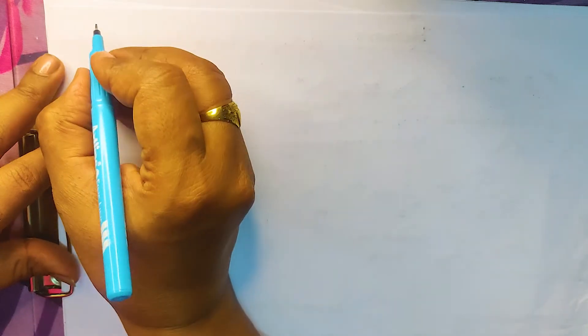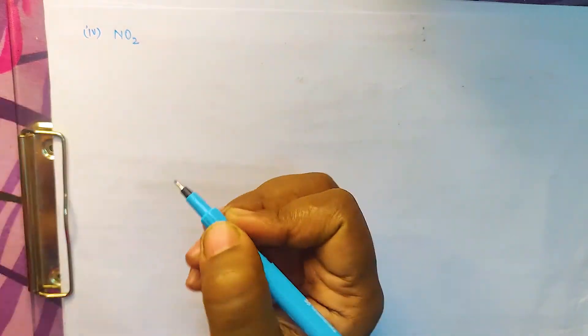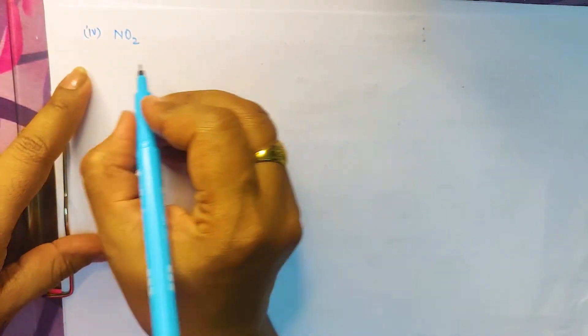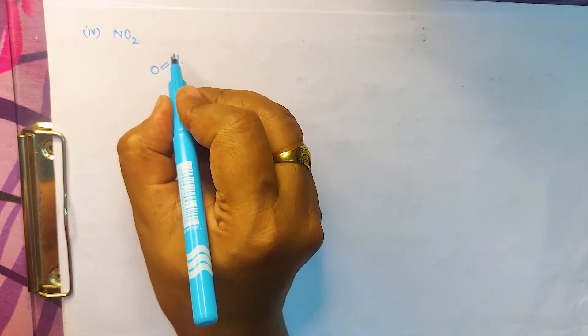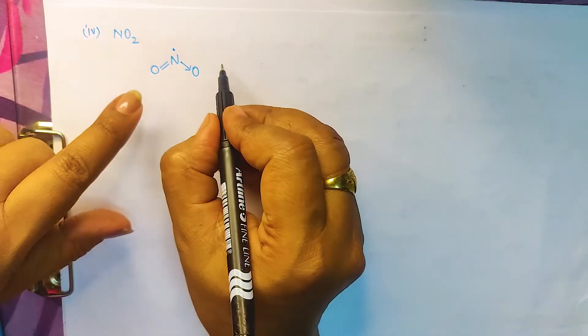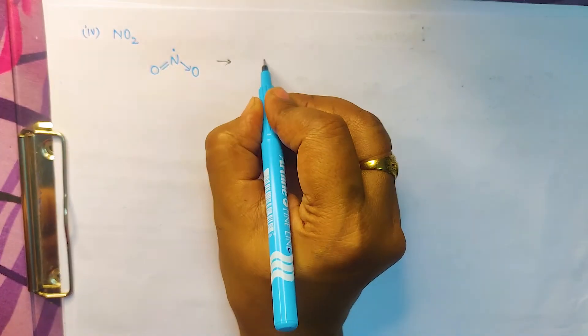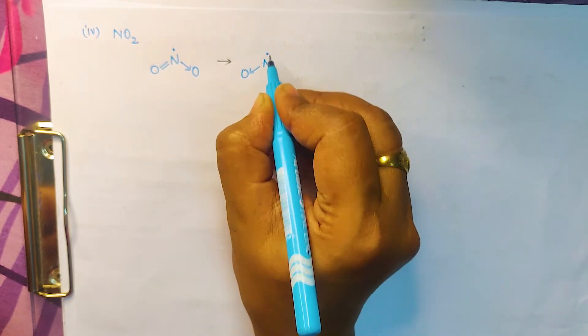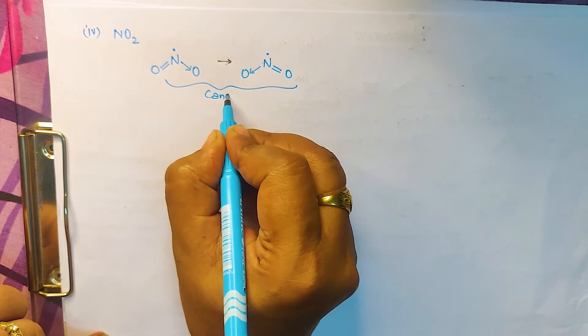The fourth example is NO2, an odd-electron molecule. Drawing the Lewis dot structure, the coordinate bond and double bond are present. Shifting the coordinate bond and double bond gives two canonical structures for NO2.